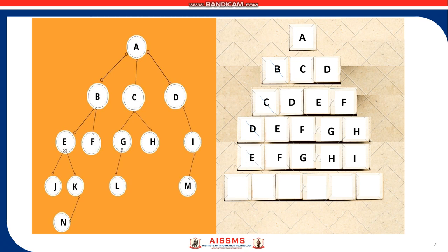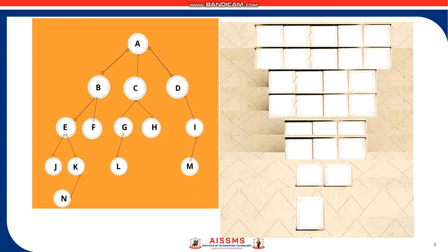When E is taken out from the Queue, the paths from E which are J and K need to be inserted from the tail, and we get F, G, H, I, J, K. When F is taken out from the Queue, we see that F leads to no new path. So we take out G from the Queue and the path from G which is L needs to be inserted from the tail, so we get H, I, J, K, L.